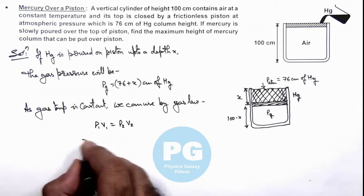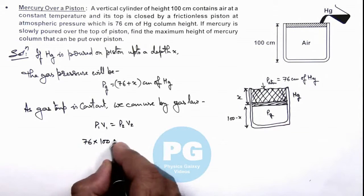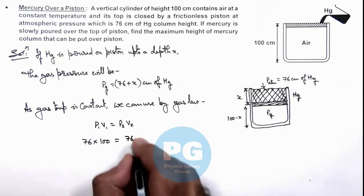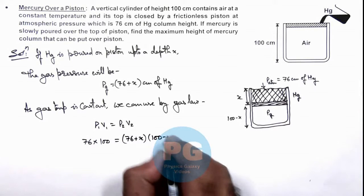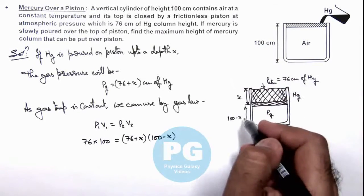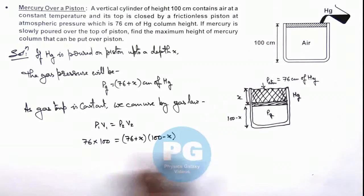Later, the pressure changes to 76 plus x, and the volume changes to 100 minus x. Here I am taking volume as 100 and 100 minus x because the cross-sectional area, if you multiply to get the volume, that gets cancelled out on both sides.